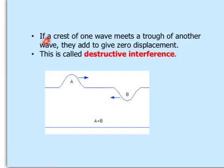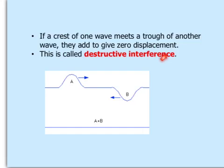If a crest of one wave meets a trough of another wave, they add to give zero displacement. This is called destructive interference. When a crest of this wave meets with the trough of this wave, they add up to nothing.